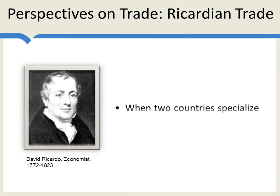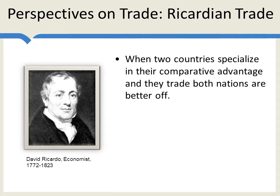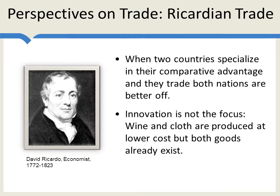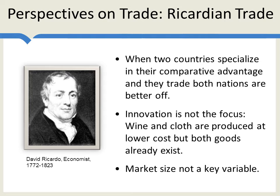I want to begin by giving two perspectives on trade. The first is the Ricardian perspective. Ricardo said when two countries specialize in their comparative advantage — that is, they specialize in producing the good which they can produce at lowest opportunity cost — and then they trade, both nations are better off. Notice that innovation is not the focus of Ricardo. There already are two goods, wine and cloth. We can get more of both if Portugal specializes in wine, England in cloth, and then they trade. For Ricardo, trade is about improvements in static efficiency. Also notice that in Ricardo, market size is really not a key variable.